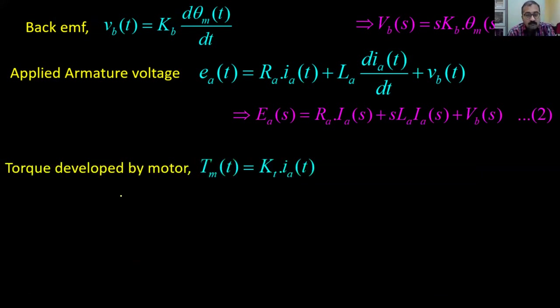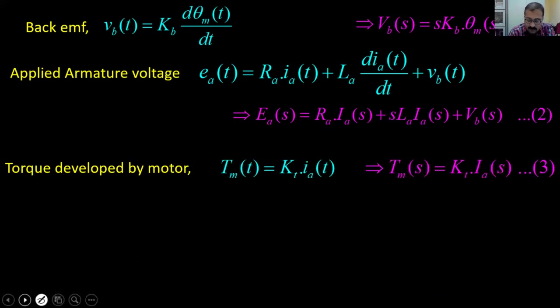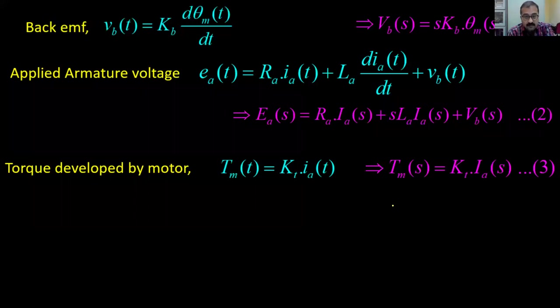The torque developed by the motor is proportional to the current flowing through it. Taking the Laplace transform: Tm(s) = Kt · Ia(s). That is equation three.